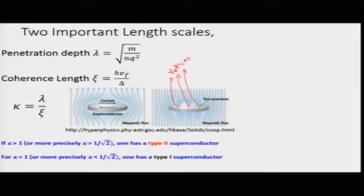From our earlier lectures, we have been introduced to two different length scales associated with the superconductor. One is the penetration depth, which is the distance up to which the magnetic field actually enters into the superconductor; the remaining part of the superconductor has B equal to 0. The distance the magnetic field penetrates into the superconductor from the edges is given by the superconducting penetration depth lambda.